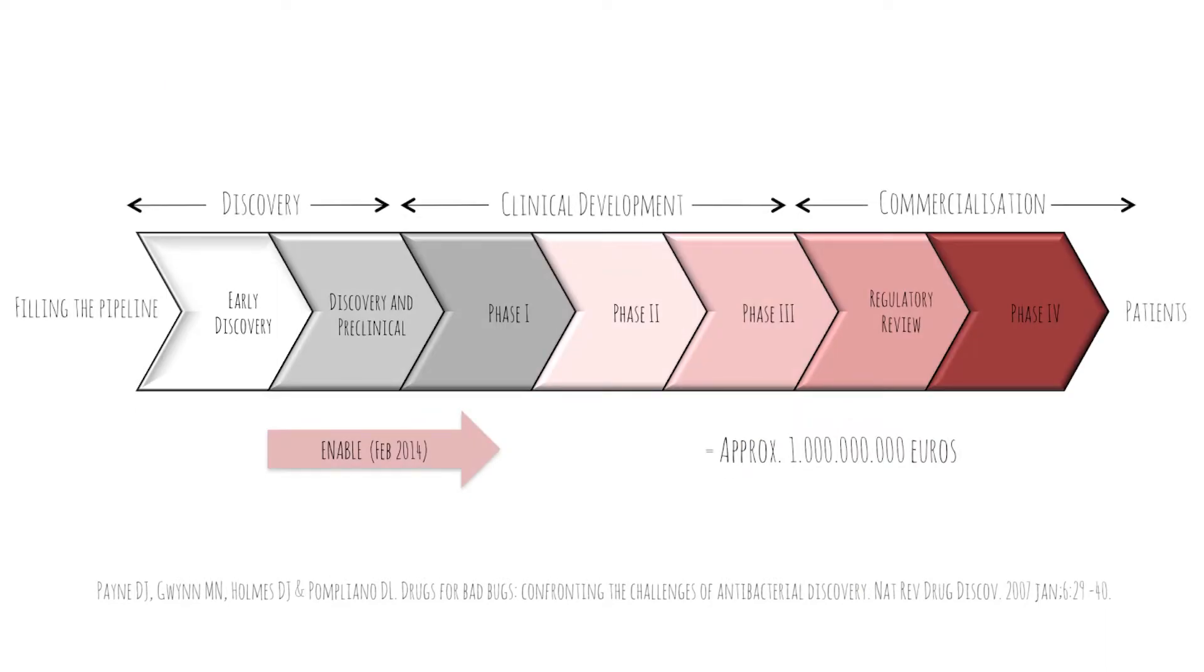So if we take the economics firstly, it takes about 15 years from beginning a discovery project until you get a new antibiotic onto the market, and it costs an estimate of around about 1 billion euros to do this. Now the pharmaceutical companies can make very little profit on this type of economic scheme because as you know we have resistance arising all the time, so the effective lifetime of these new drugs might turn out to be very short. Also patients are treated for short periods of time.